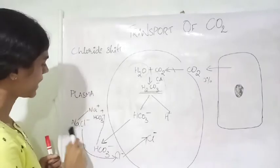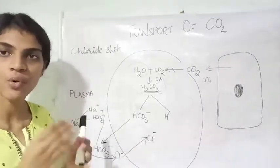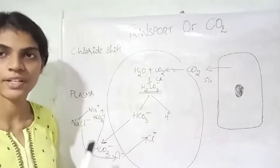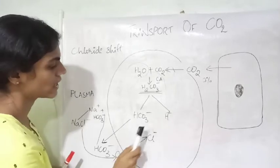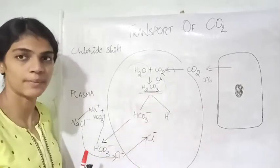Now what is left here? Na+. The sodium chloride inside the blood will dissociate into Na+ and Cl-. This Cl- is taken into the interior of the RBC.